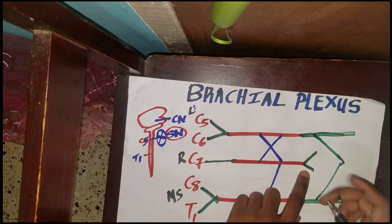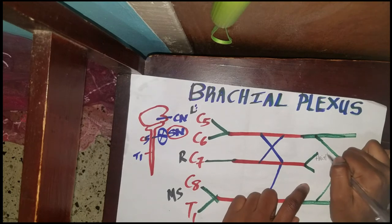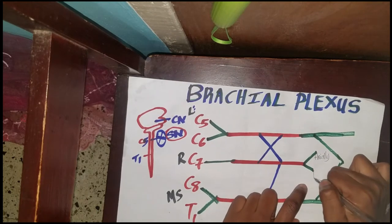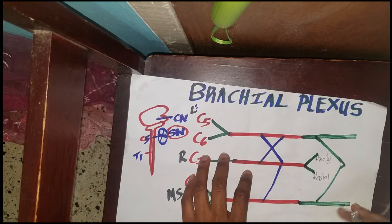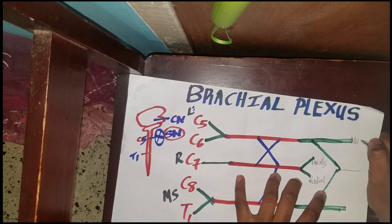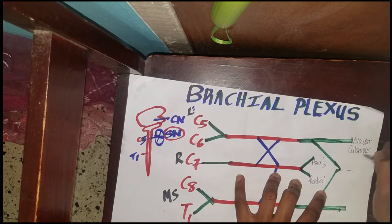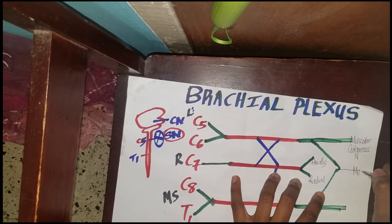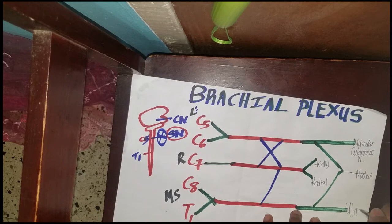Where we see those two branches, we get the axillary nerve and the radial nerve. From the next set we get the musculocutaneous nerve, the middle one is the median nerve, and the lower one is the ulnar nerve.